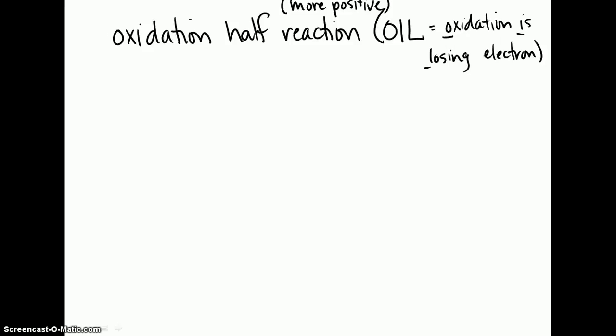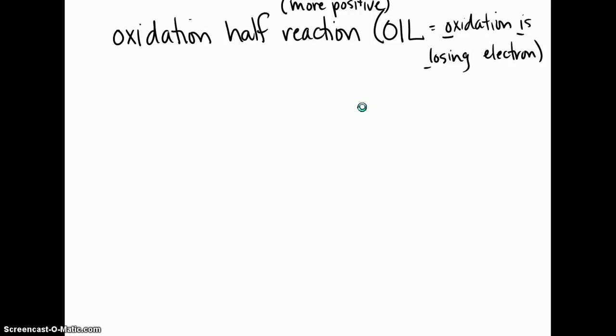So if I go back here to our original one, I'm going to try to figure out which one of these elements is becoming more positive. I have magnesium that starts off with a zero charge and here becomes a plus 2 charge. So it started off at zero. It has become more positive to being a plus 2. So magnesium is the one that lost its electrons. So I'm going to write down magnesium.